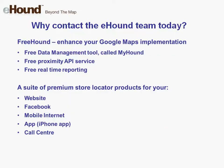To summarise, eHound offers four key benefits for building great store locators. Number one, a free easy-to-use data management tool called MyHound. Number two, a free proximity service that allows you to make easy 'find my nearest' queries and combine them with Google Maps. And number three, free usage statistics reports so you can measure and see the success of your store locator. Using Freehound instead of purely Google Maps will save you time and therefore money.